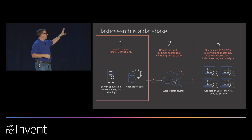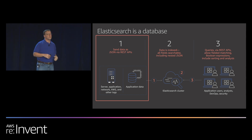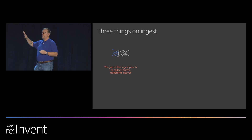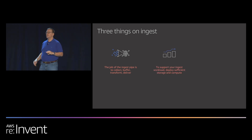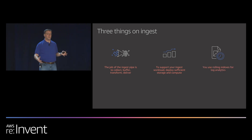Today we're focusing on the ingest piece for log analytics — gathering from servers, applications, AWS services, networking, CPU, and all basic infrastructure, and sending it into Elasticsearch. I'll touch on three topics before Josh talks about Pearson's experience: first, the job of the ingest pipeline and how to set it up; second, how to scale your Elasticsearch cluster for your ingest workload; and third, index lifecycle and data management — rolling data in and out of the hot store.